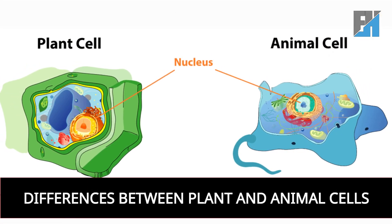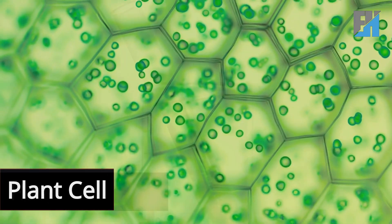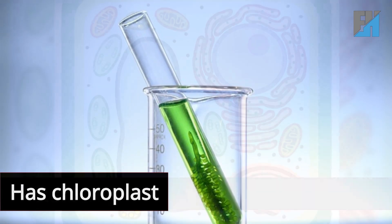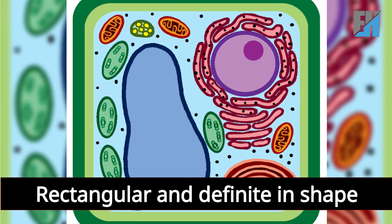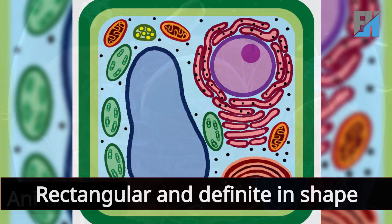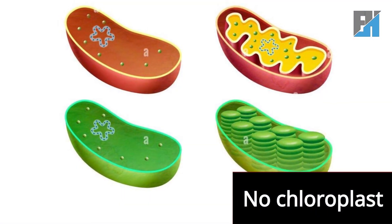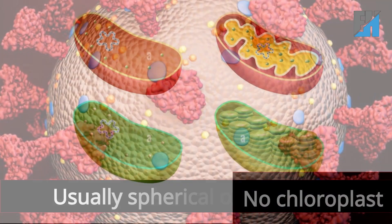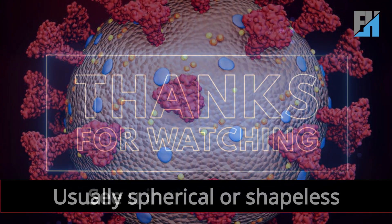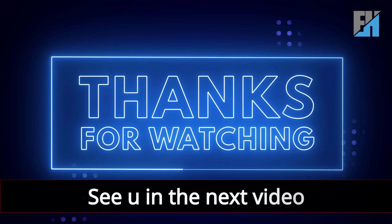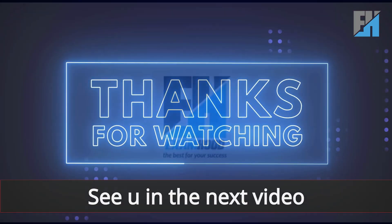Differences between plant and animal cells: plant cells have chloroplasts and are rectangular with a definite shape, while animal cells have no chloroplast and are usually spherical or shapeless. Thanks for watching — see you in the next video.